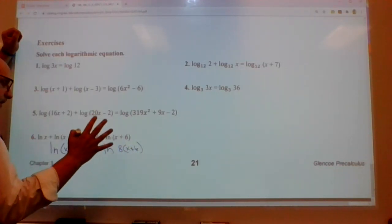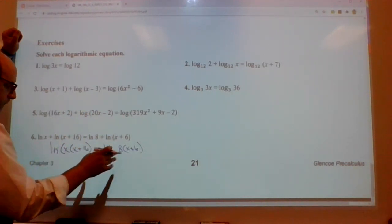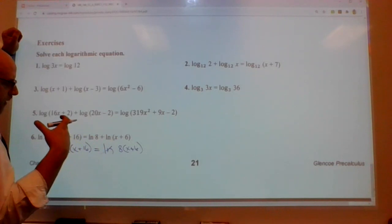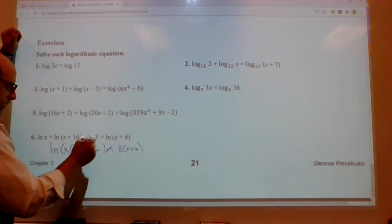We have natural log x times (x plus 16) equals natural log 8 times (x plus 6). All right. Well, the bases are the same. We can get rid of those things because we can multiply both sides by e and then everything would be great.